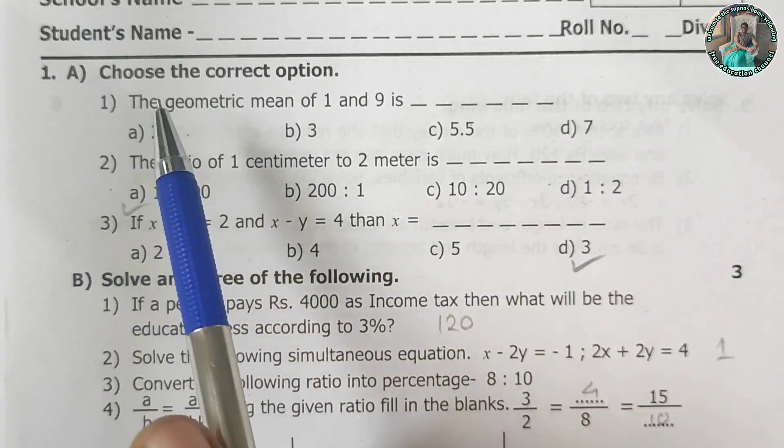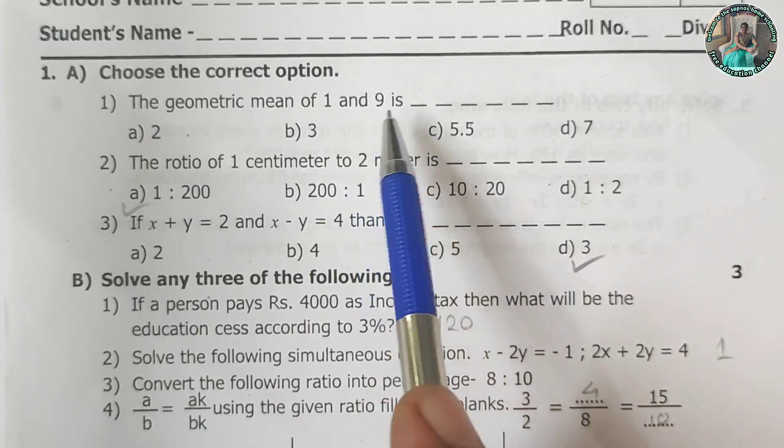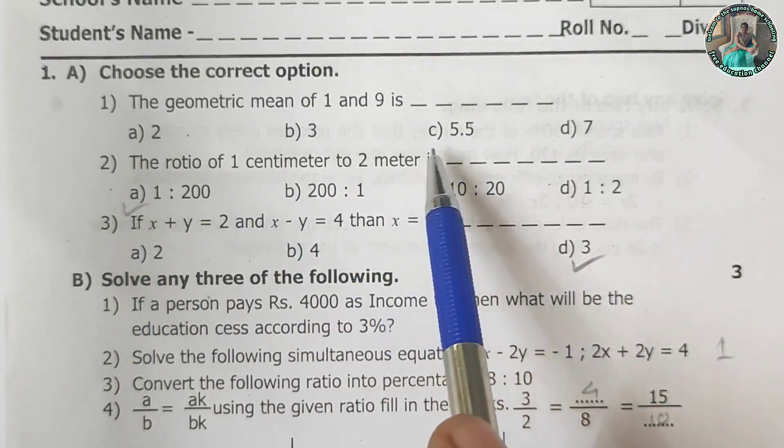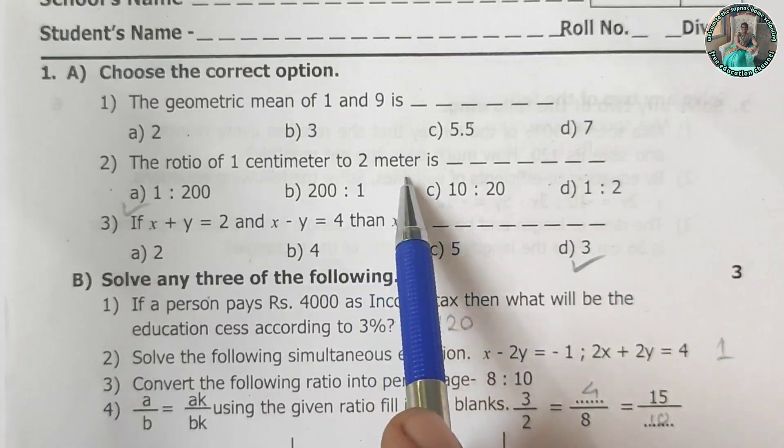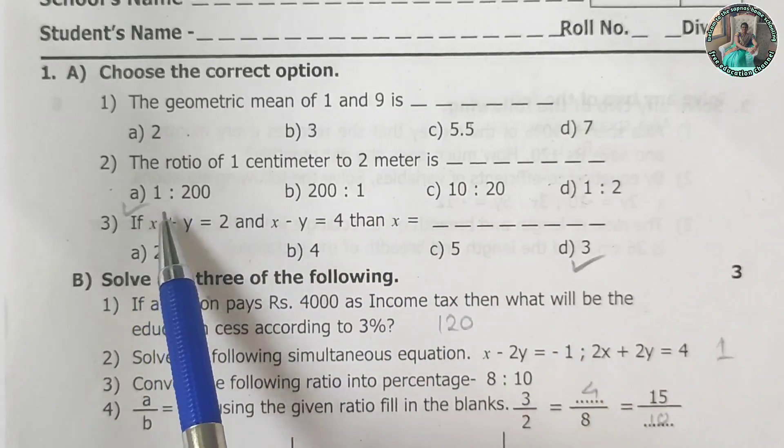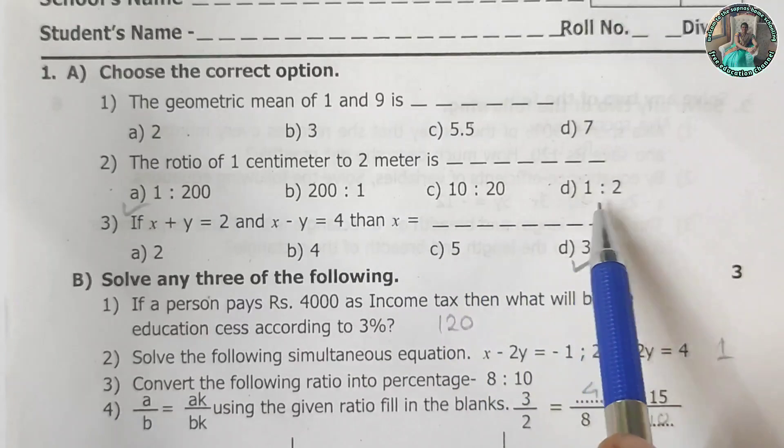What is the first question? Choose the correct option. The geometric mean of 1 and 9 is 2, 3, 5.5 and 7. Choose the correct answer. The ratio of 1 cm to 2 m is 1 is to 200, 200 is to 1, 10 is to 20, 1 is to 2.